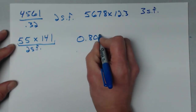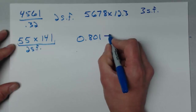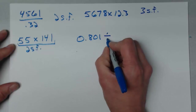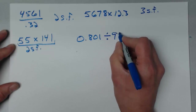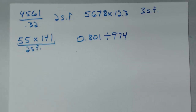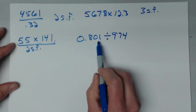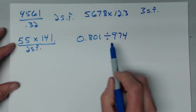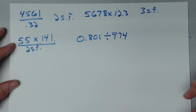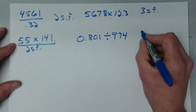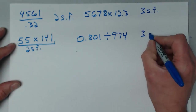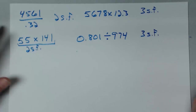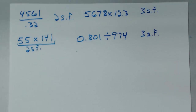Next: 0.801 divided by 0.974. I have three significant figures in 0.801 and three significant figures in 0.974. Whatever result I get, I can keep only three significant figures. Remember, you'll have to round — not just chop things off — but only three significant figures.